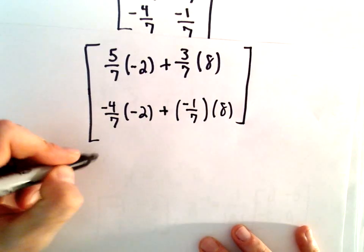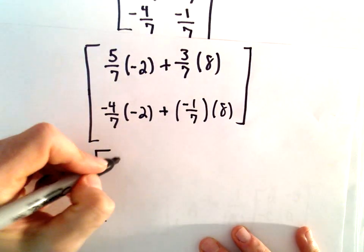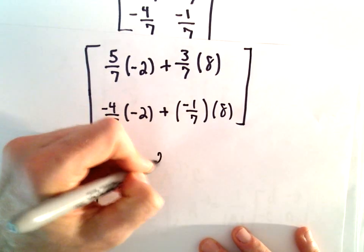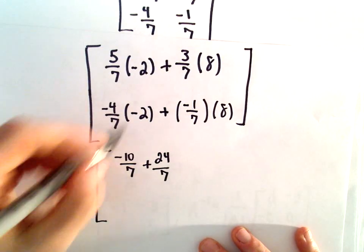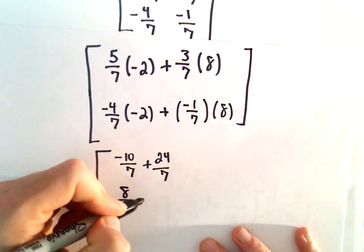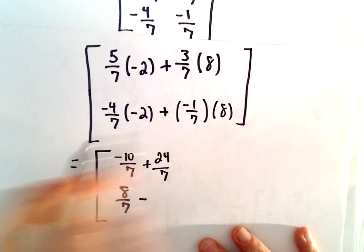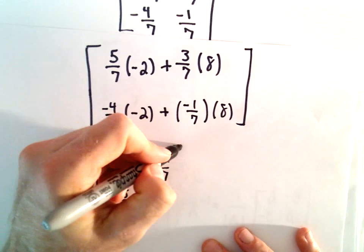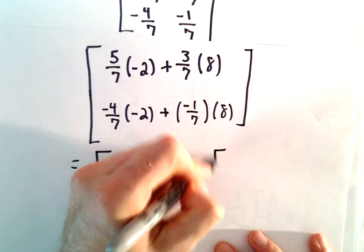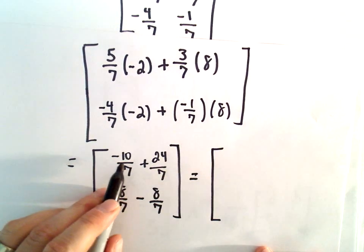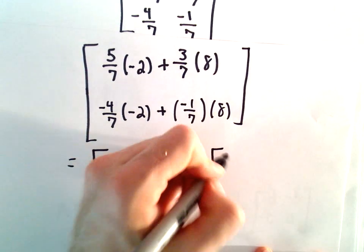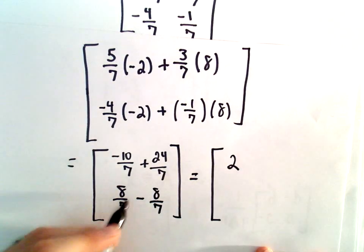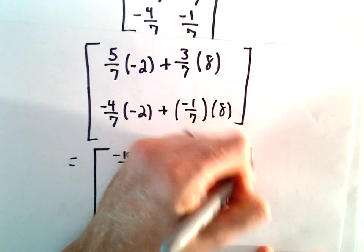Alright, so almost there, that's going to be negative 10 over 7 plus 24 over 7, and then we'll have 8 over 7 minus 8 over 7. And if we simplify, negative 10 plus 24 will leave us with 14 over 7, or positive 2, and then our next entry will simply be 0.